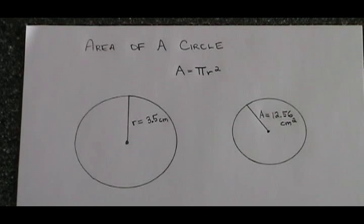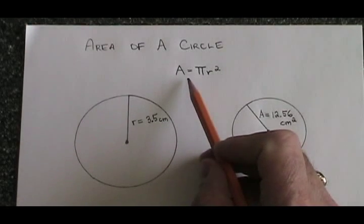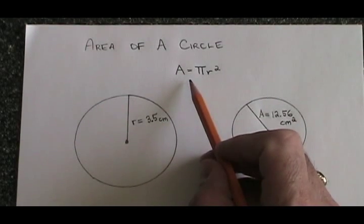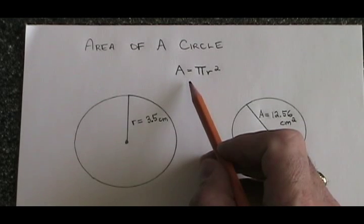The formula for the area of a circle is A equals pi r squared. A is the area and r is the radius.